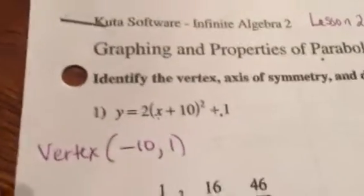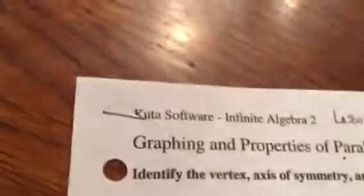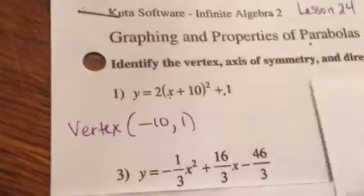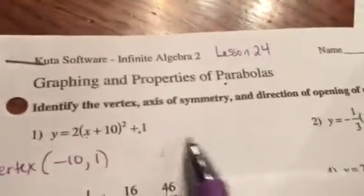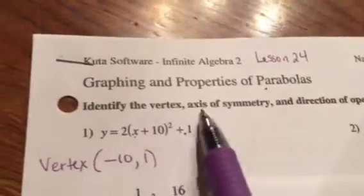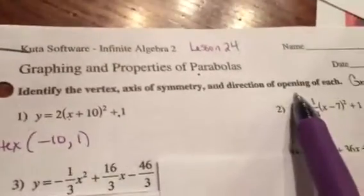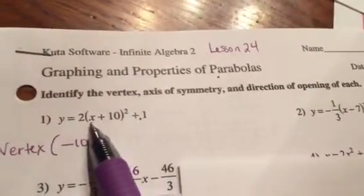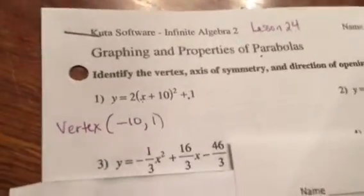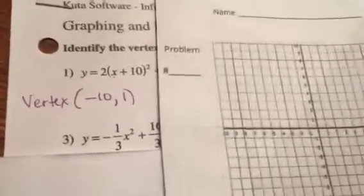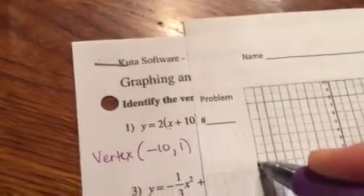So when you get ready to graph this, yes, they might fall off your graph. Because remember, I said graph. So I can tell you the vertex. I can actually tell you the axis of symmetry. But we're going to look at your graph and see if you can figure it out, and the direction of the opening.